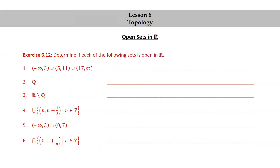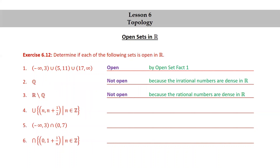Let's try another exercise. Determine if each of the following sets is open in R. (1) (−∞, 3) ∪ (5, 11) ∪ (17, ∞) is open by open set fact 1. (2) Q, the set of rational numbers, is not open, because the irrational numbers are dense in R. (3) R minus Q, the set of irrational numbers, is also not open, because the rational numbers are dense in R. (4) The union of open intervals (n, n + 1/2) such that n is in Z is open by open set fact 1. (5) (−∞, 3) ∩ (0, 7) is open by open set fact 3. (6) The intersection of open intervals (0, 1 + 1/n) for n in Z is not open, because this set equals the half-open interval (0, 1] which includes 1.